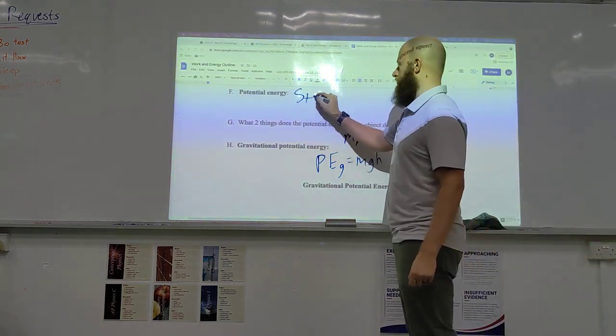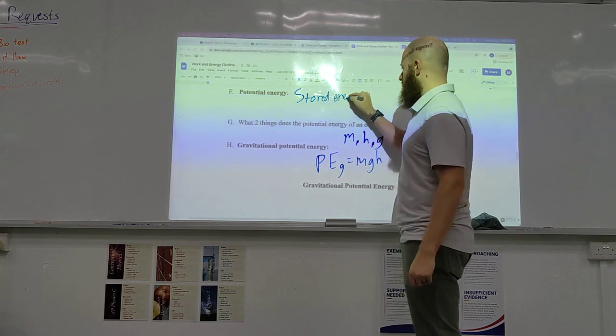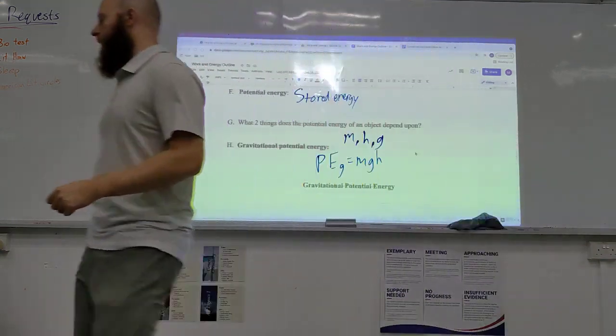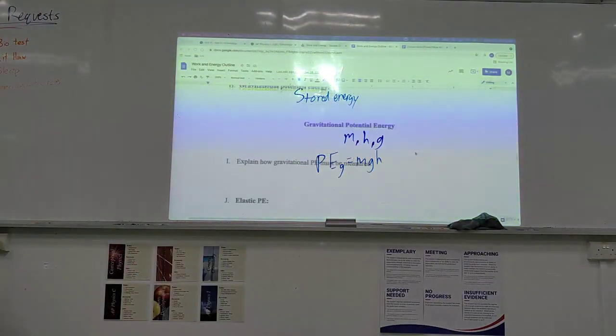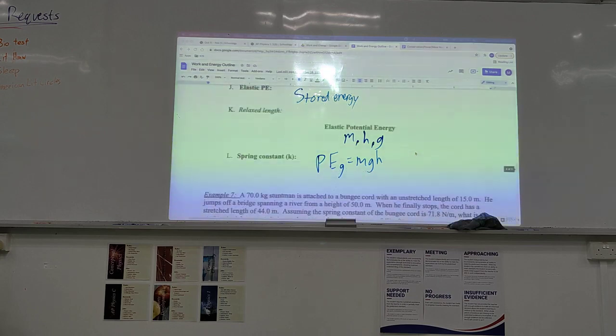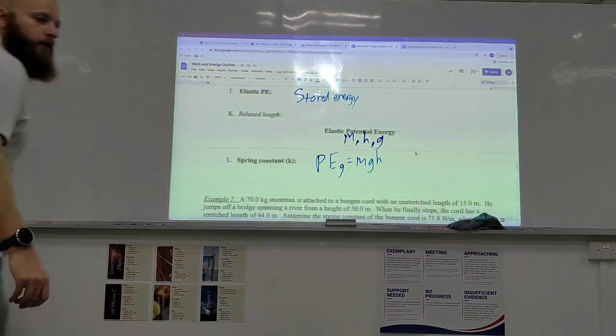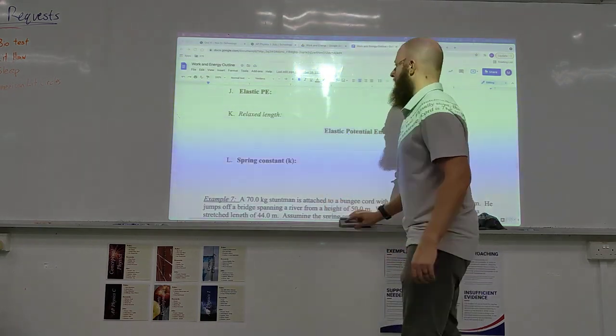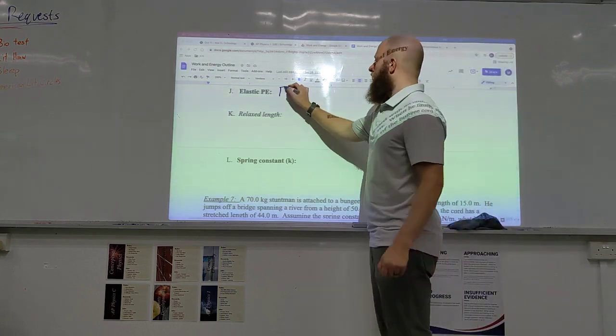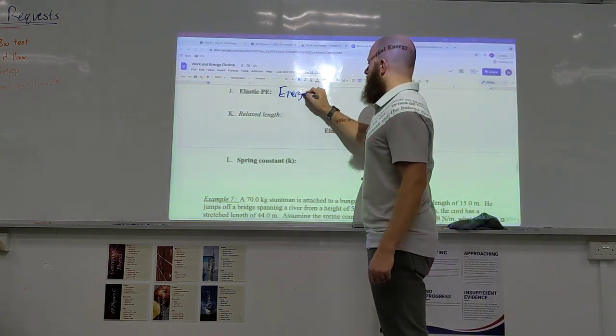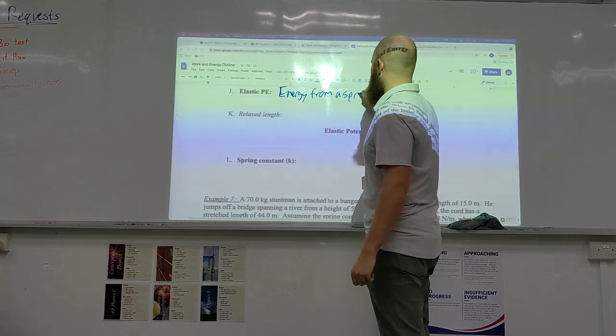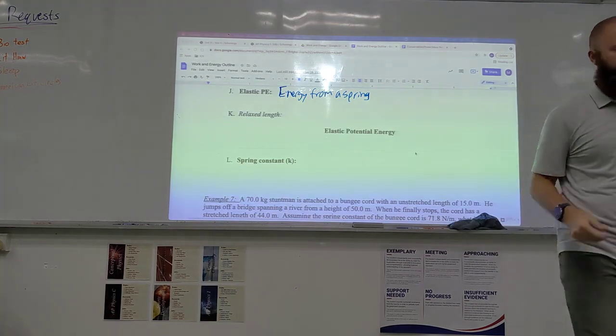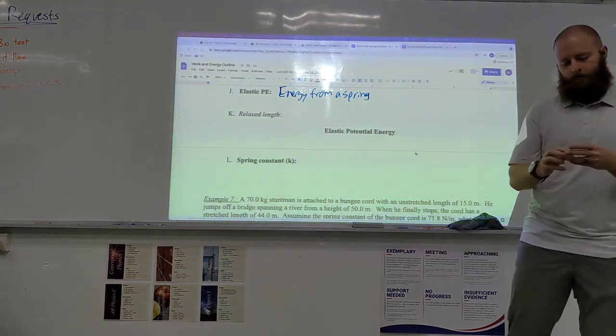Potential energy is just stored energy. So, let's go ahead and keep moving. The second type of energy we're going to talk about is elastic potential energy, or energy from a spring. In this case, what we're thinking about is, I have a rubber band.